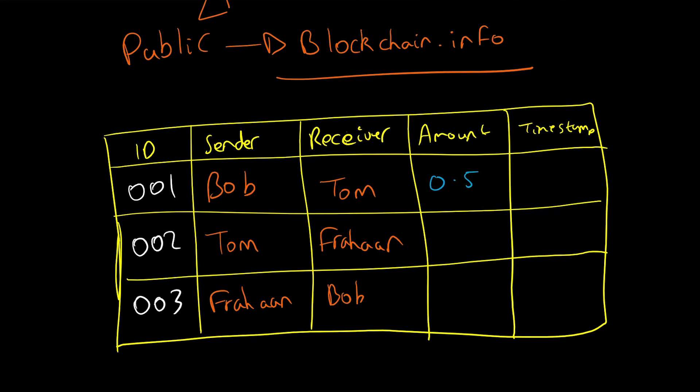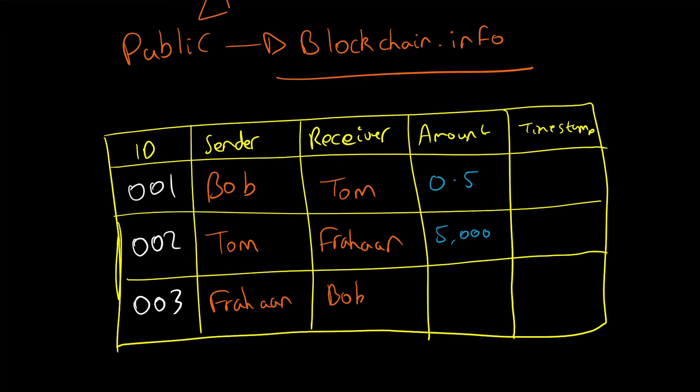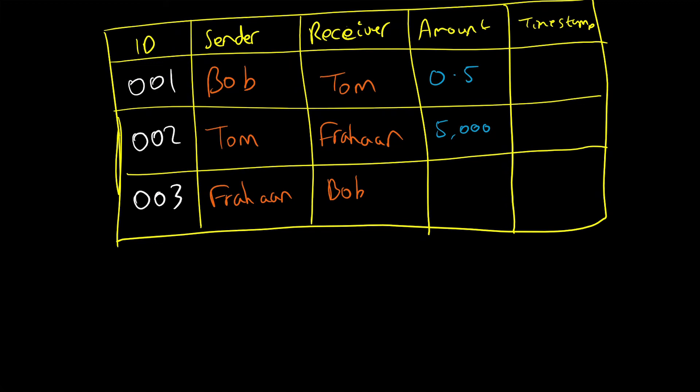To Tom. Tom sends 5,000 bitcoins to me. Very well done, Tom. And then Frahan, aka me, I just send a measly 0.001 Bitcoin because I want to keep them all for myself.